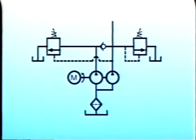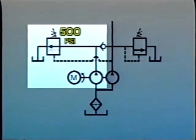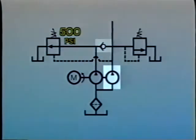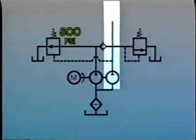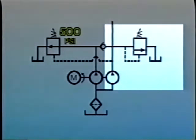If the unloading valve is set at 500 PSI, the large pump will return to tank when pressure gets to that point. A check valve prevents the small pump from unloading, so it continues to supply 5 GPM at a pressure that rises to the setting of the relief valve, 1500 PSI.